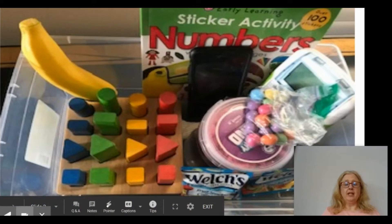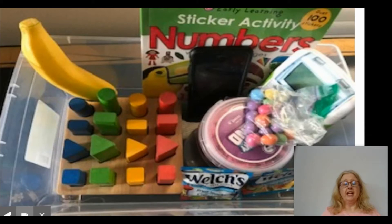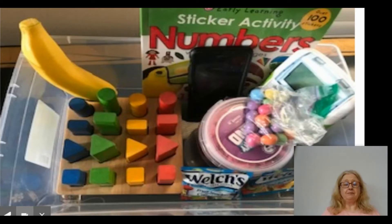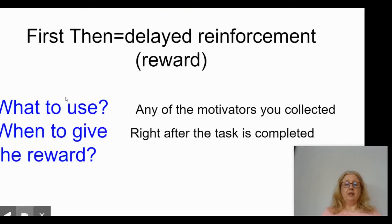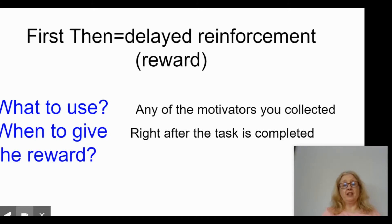What we do is we try to delay giving our child the reward until after they do an activity that we want them to do first. For example, first you do a puzzle, then you'll get a candy. That's what a first-then is — it's delayed reinforcement, a reward. It means that your child has to wait a little bit and do one task that you want them to do in order to get something that they want.